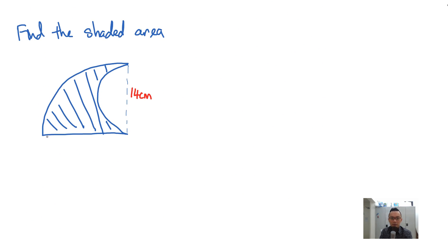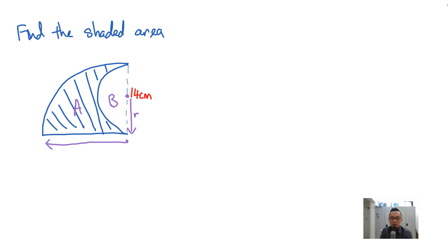Next question: find the shaded area. This part is a quarter circle, and this part is a semicircle. I always find the radius first. I'm going to label this A and label this B. Labeling is very important when you have composite figures — figures made up of several shapes — so you know what you're working with. Let me write down the radii: the radius of A is 14 cm.